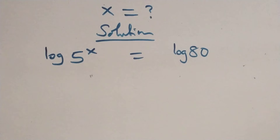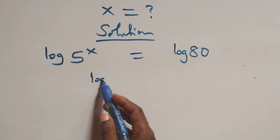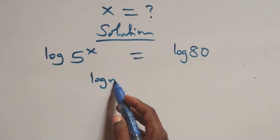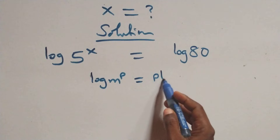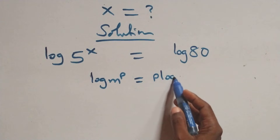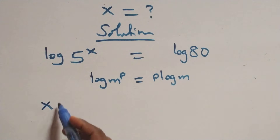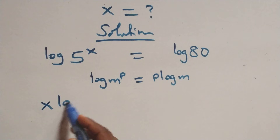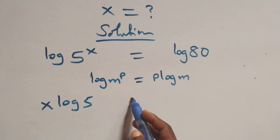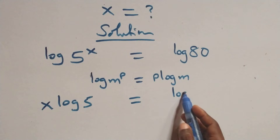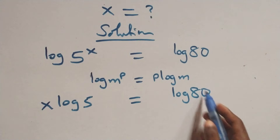The next step is we apply the power rule of logarithms. We have log of n raised to power p, which is the same thing as p times log n. And so here we have x log 5 equals to log 80 on this side.